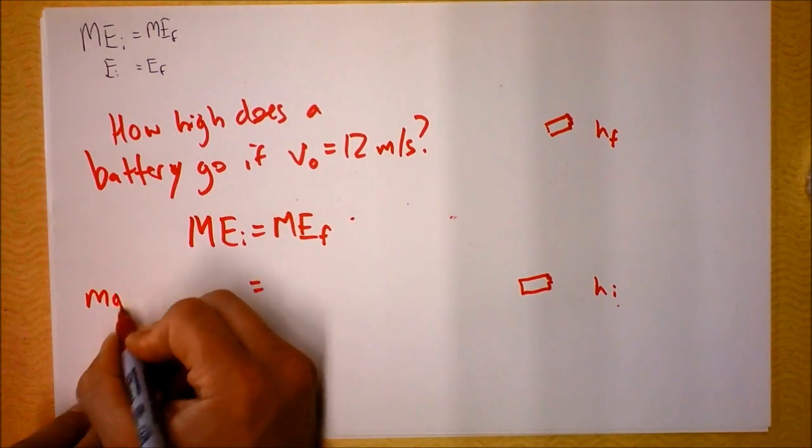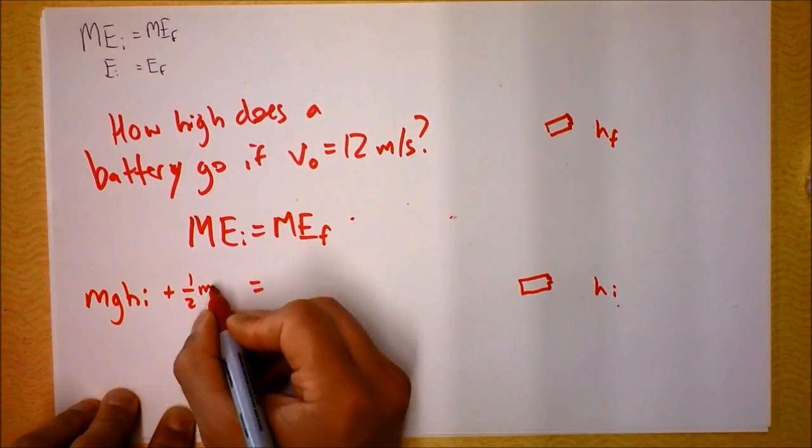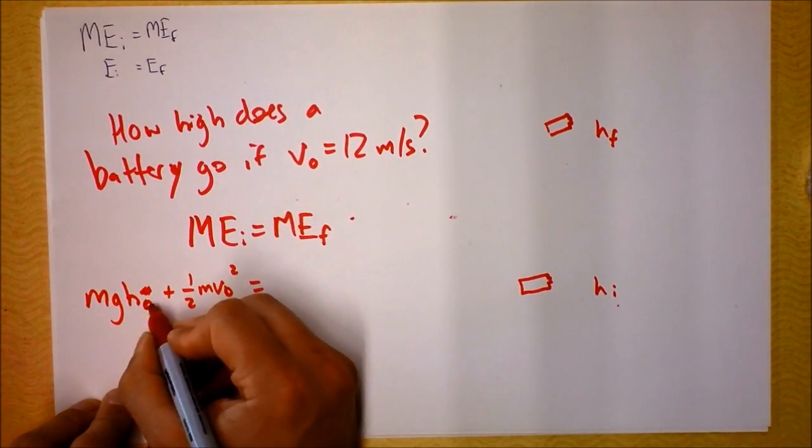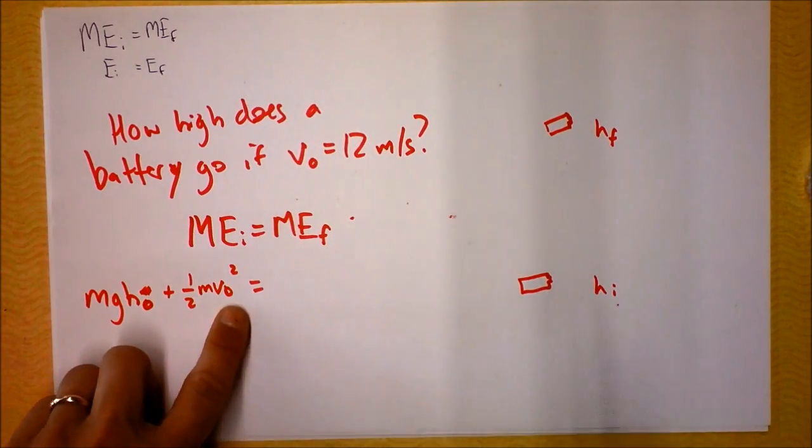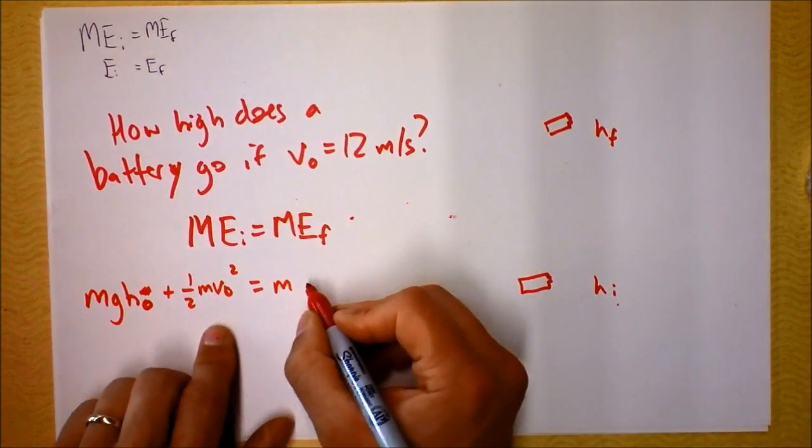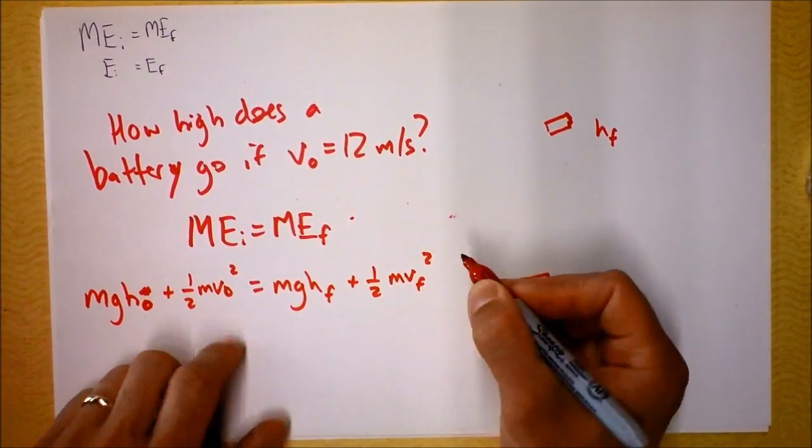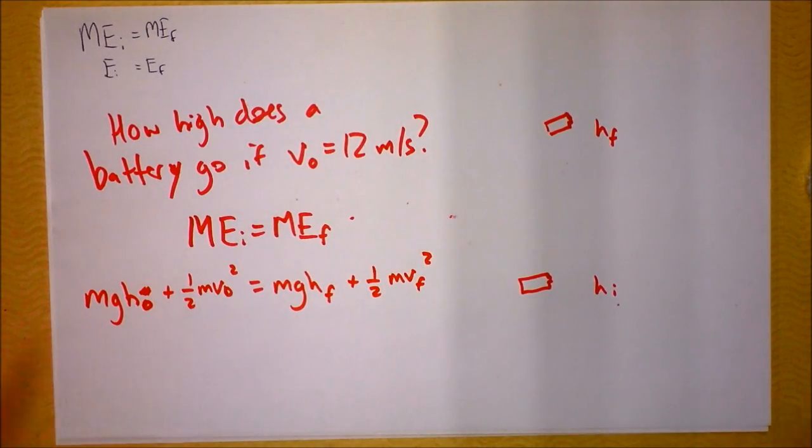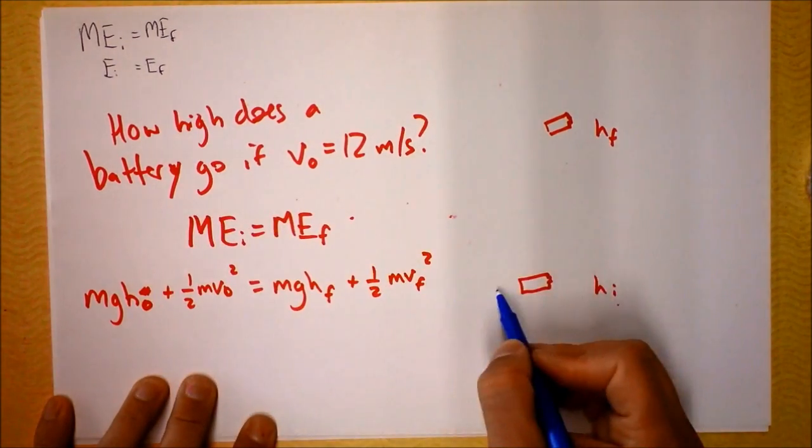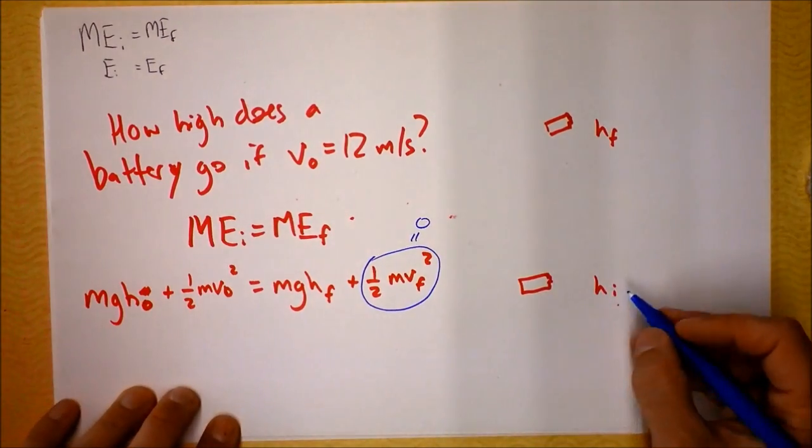We could write some forms of energy that the battery may have initially: M times G times Hi plus one half M V naught squared. Finally it could have those same types of energy: MGHf plus one half M Vf squared. Let's identify some things that are zero. When the battery reaches the top of its peak, its final velocity will be zero.